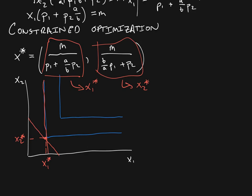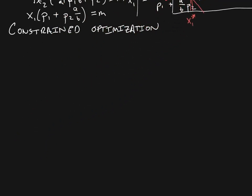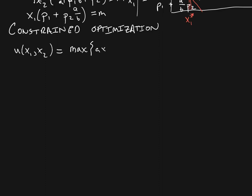As a bonus: related to the Leontief utility function, we could have a utility function equal to the maximum of AX1 and BX2, rather than the minimum. This is an incredibly easy function to solve, because we just want to maximize one of these two terms. Which one should we choose to maximize depends on the bang for the buck.